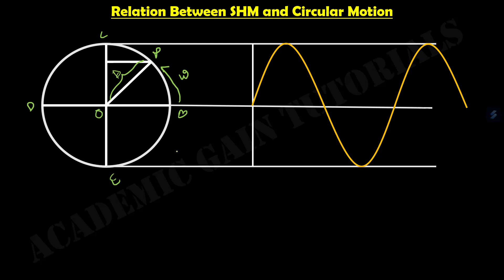We represent this radius as A. This radius means our amplitude. When this particle moves from point B to point P, it covers a horizontal distance O to N, and this ON represents our displacement Y. So when we calculate this displacement Y, it will be equal to A sine omega T.